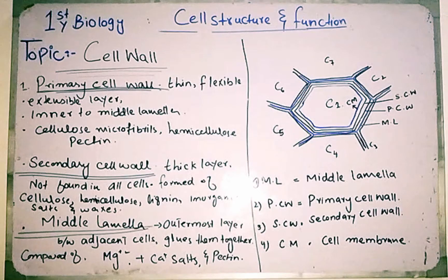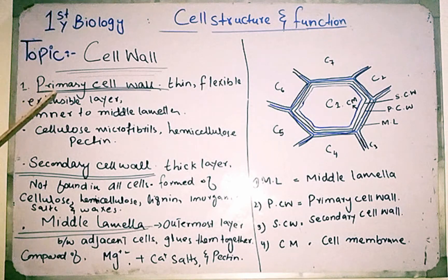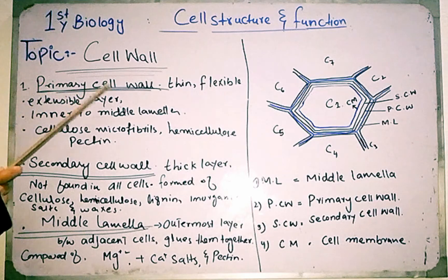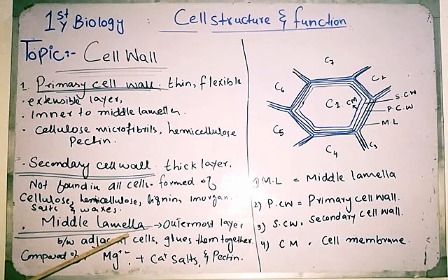Now we are going to discuss the structure of the plant cell wall. The plant cell wall consists of three layers: the primary cell wall, the secondary cell wall, and the middle lamella.